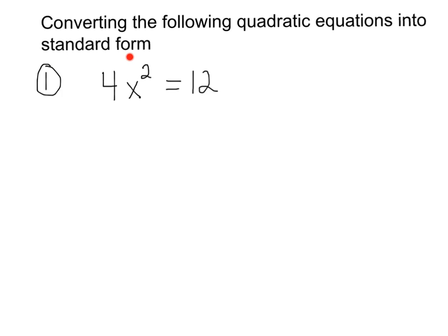Now, they want us to put it in standard form. Well, if you're trying to convert something to standard form, you've got to know what that is, right? Standard form is ax squared plus bx plus c equals zero. So we're trying to get this equation right here to look like this.